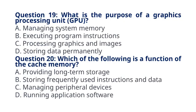Question 19: What is the purpose of a graphics processing unit (GPU)? A. Managing system memory, B. Executing program instructions, C. Processing graphics and images, D. Storing data permanently. The correct answer to question 19 is option C: Processing graphics and images. Explanation: GPUs are specialized processors designed for rendering graphics and processing images.